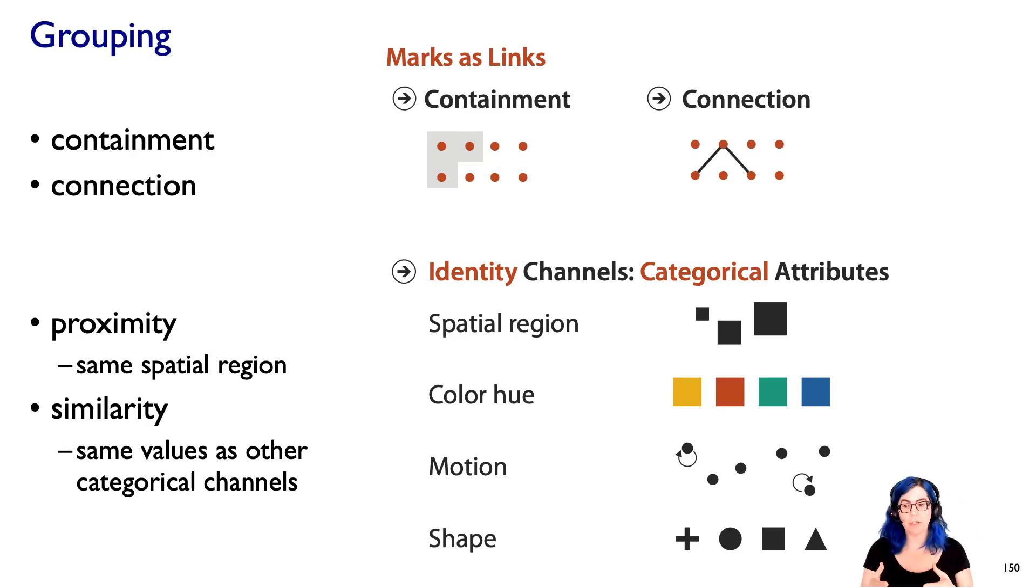That is, things that are in the same region, we think of as similar. Proximity has a perceptual meaning. And any of these other categorical channels, for example, you could think of all the red things versus all the blue things. People will then actually perceive them as being similar to each other. So having the same value in a categorical channel, whether it's color or shape or motion or one of the others, is a way to explicitly convey grouping.